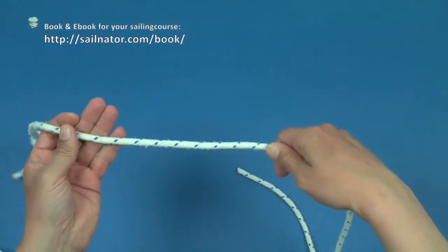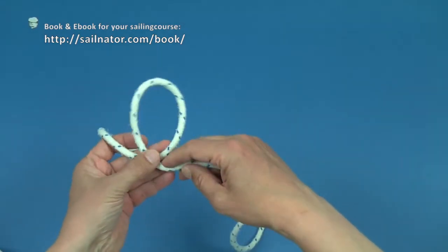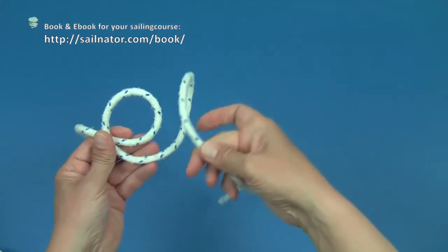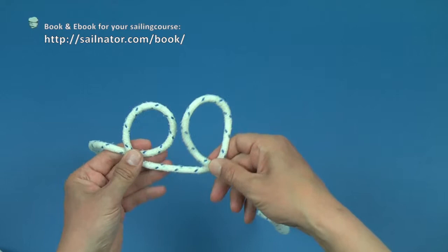I show the laid clove hitch once again. I lay a loop now where the loose part lies over the moored part and next to it a second loop where the loose part lies over the moored part.